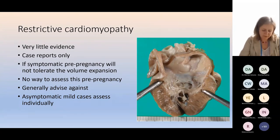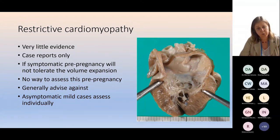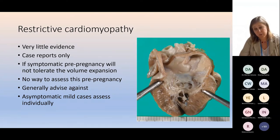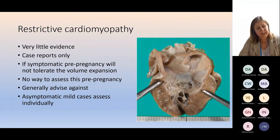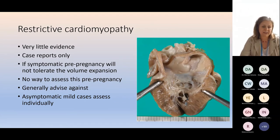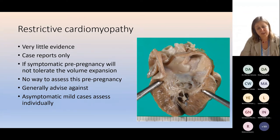In contrast, restrictive cardiomyopathy is not well tolerated in pregnancy. There is very little evidence — case reports only. If a woman is symptomatic pre-pregnancy, she will not tolerate the 50% volume expansion. Unless this is treatable — which sadly it generally isn't, it's manageable but not treatable — this is a case to advise against pregnancy. Although you can assess the increase in cardiac output by exercise testing, you really can't assess the increase in blood volume by any other means prior to pregnancy. I would very strongly advise against pregnancy in someone who is symptomatic or already on diuretics. In an asymptomatic mild case, an individual assessment is needed.